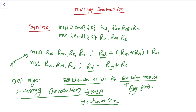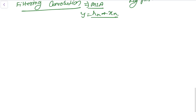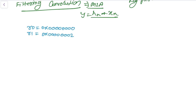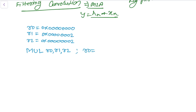Let's understand this with an example. Let's say R0 = 0x00, R1 = 0x40000002, and R2 has its value. We write the instruction MUL R0, R1, R2. In this case it produces the result R0 = R1 multiplied by R2.